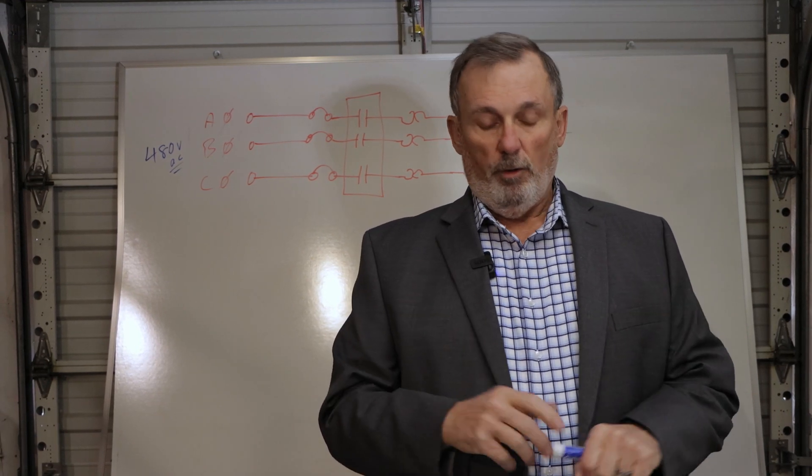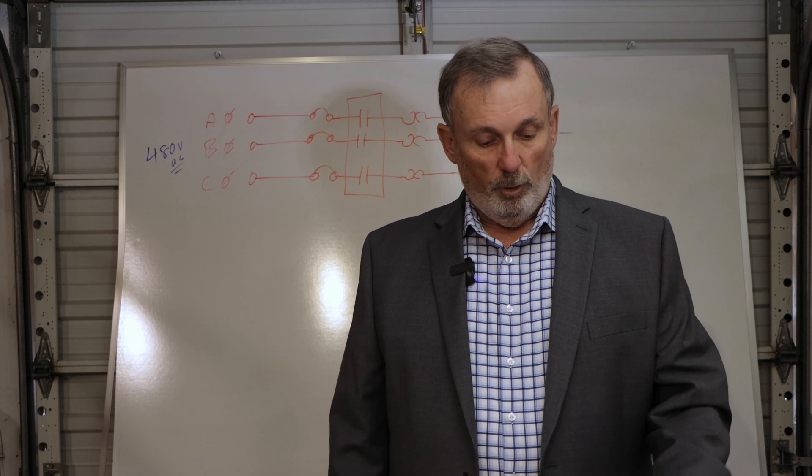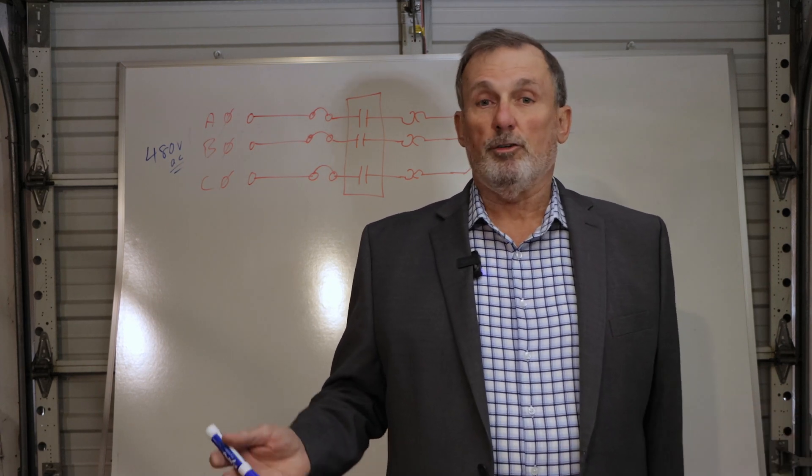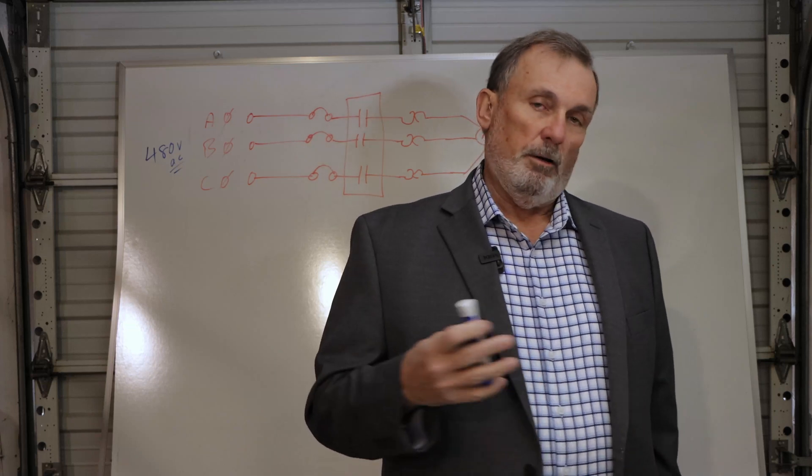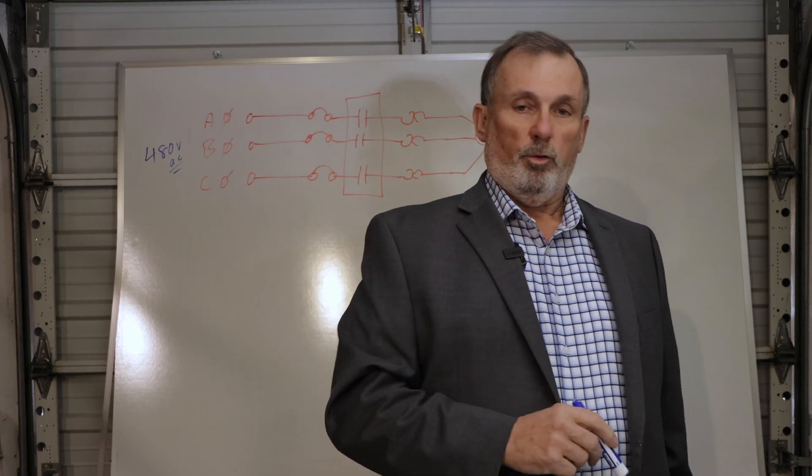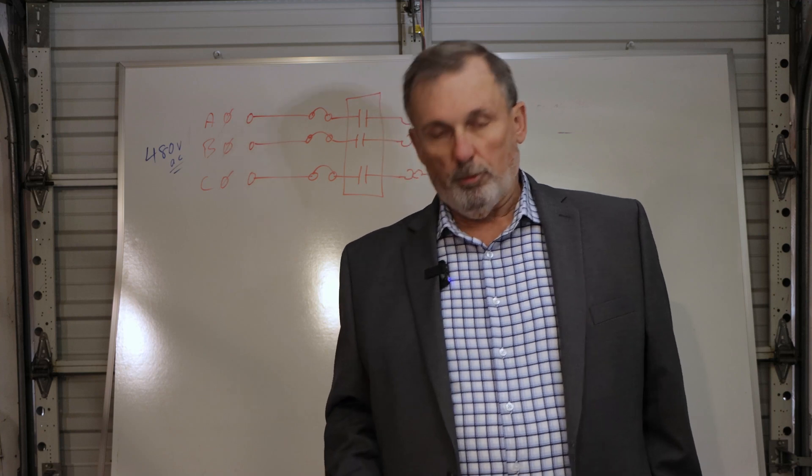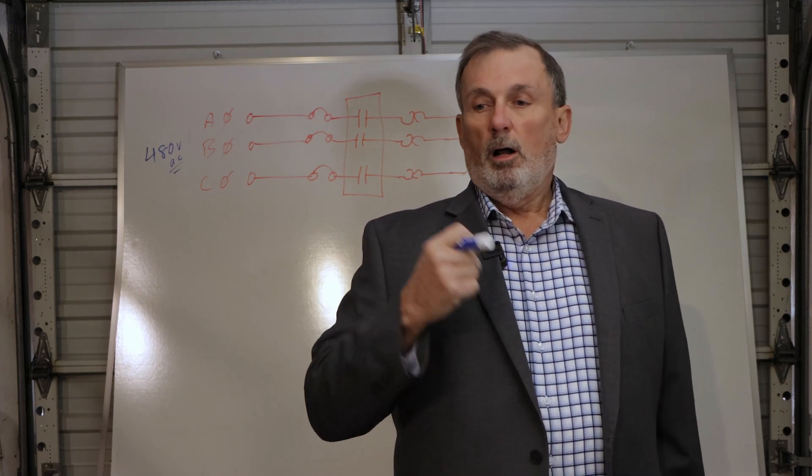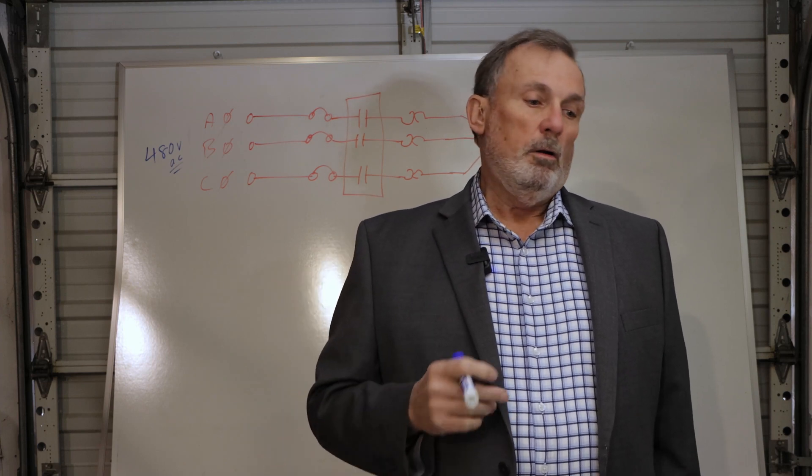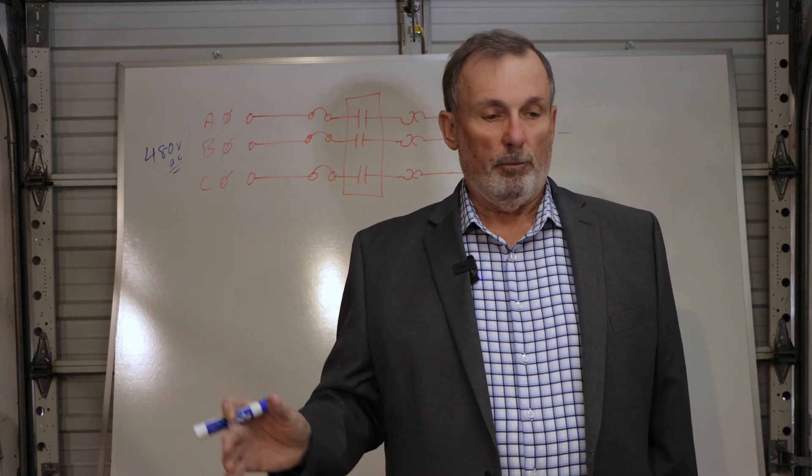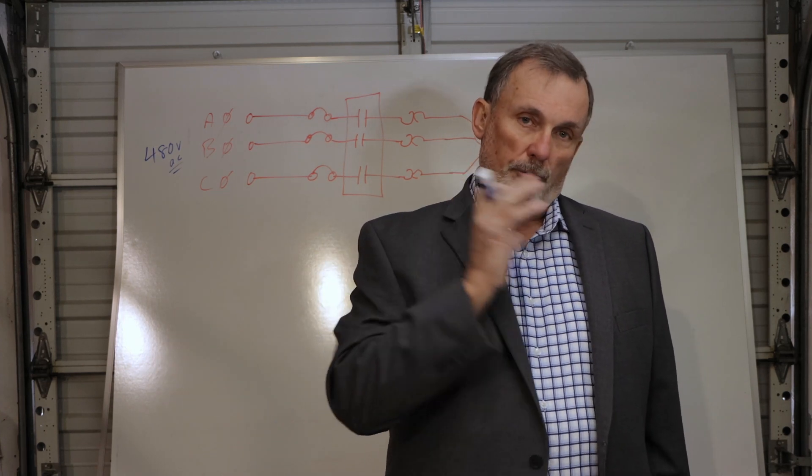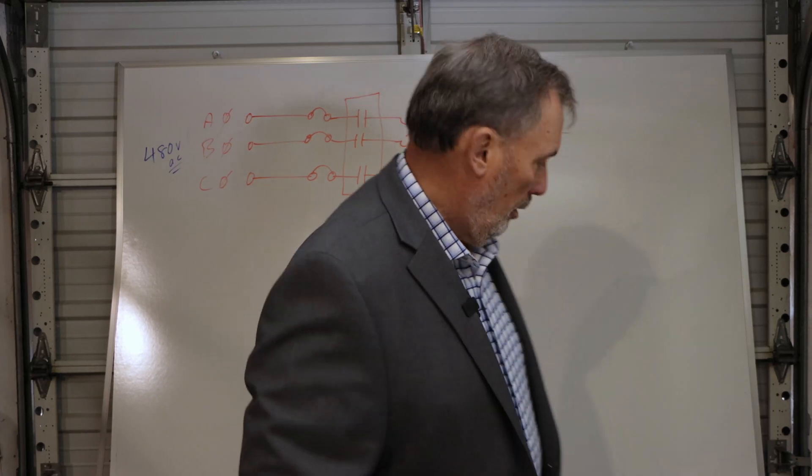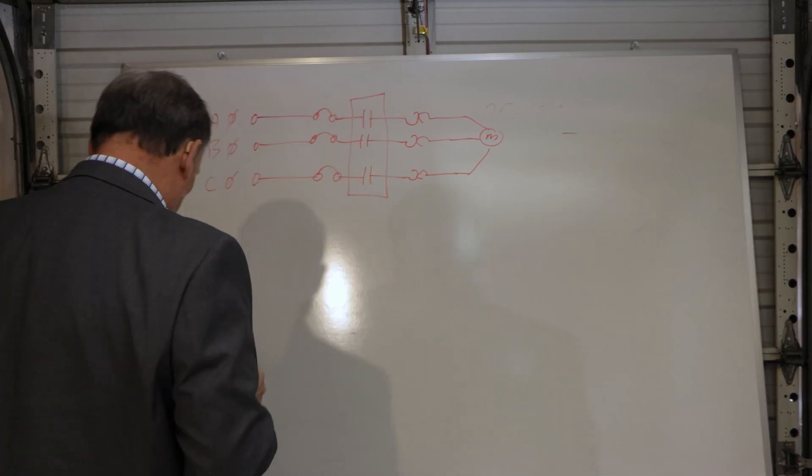Also, auxiliary switches. It's very difficult to get 480 volt indicating lights. So the convention today, and there are probably other reasons I haven't even thought of, but the convention today is controls 120 or even 24 volts, power 480, higher voltage. You get more power per size of wire per ampere of current flow. So we go 480 on the power side, 120 on the control side. Let's take a look at how we're going to get that.